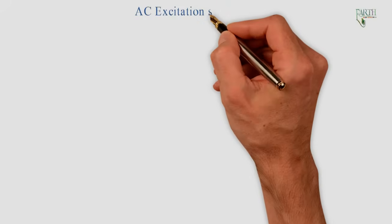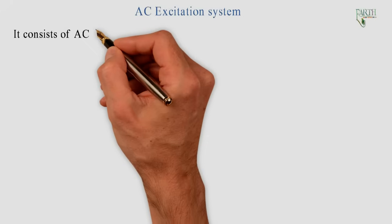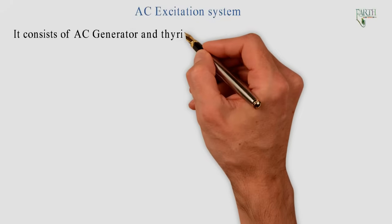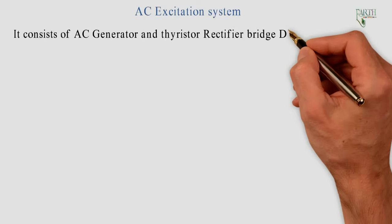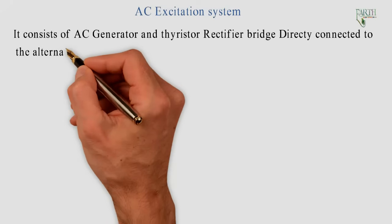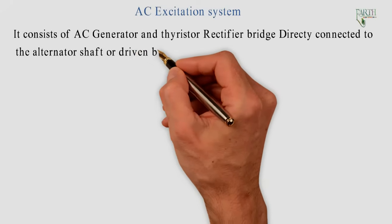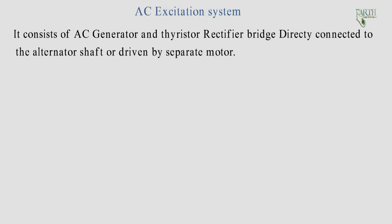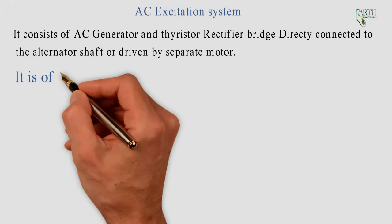AC excitation system: It consists of AC generator and thyristor rectifier bridge directly connected to the alternator shaft or driven by separate motor. It is of two types.